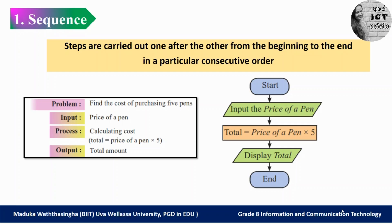As a first step we identified the input, process, and output. Then based on these, we have to design the flowchart. We start, then include the input within the rhombus shape — input the price of a pen. The rhombus shape is used to represent inputs and outputs. Then for the process, we use a rectangle shape. The process is: total = price of a pen multiplied by five. Then we have the output — the total amount. Then the problem is solved and we end the process. This is the flowchart.